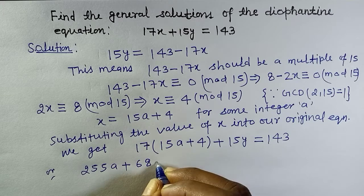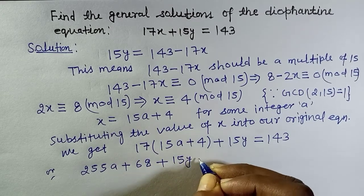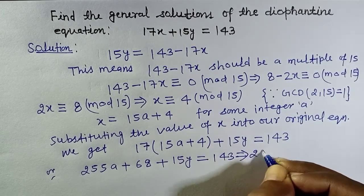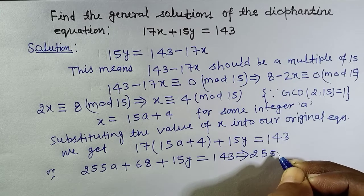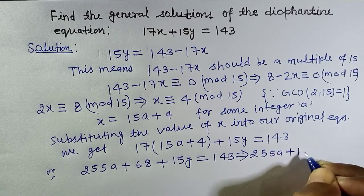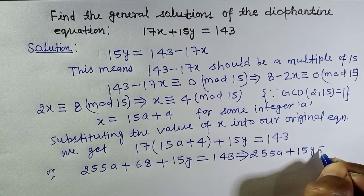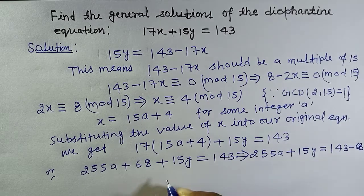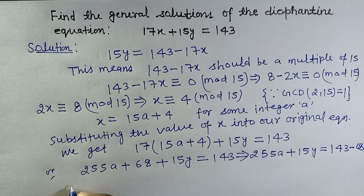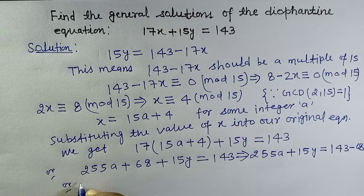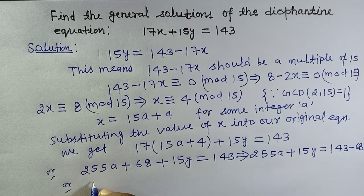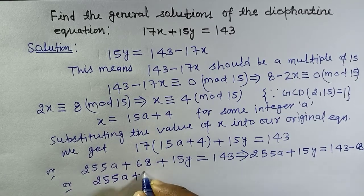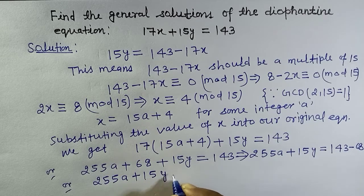We get 17 times 15a plus 4 plus 15y equals 143, or 255a plus 68 plus 15y equals 143. This implies 255a plus 15y equals 143 minus 68.